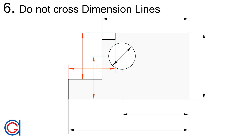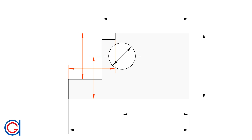Rule number 6 is that dimension lines do not cross other dimension lines or extension lines. You can see in red a good example of what not to do, and in the next shot the way it should be dimensioned.